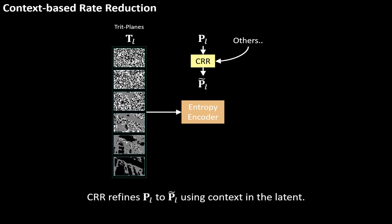CRR refines P to tilde P using context, resulting in a shorter bitstream.